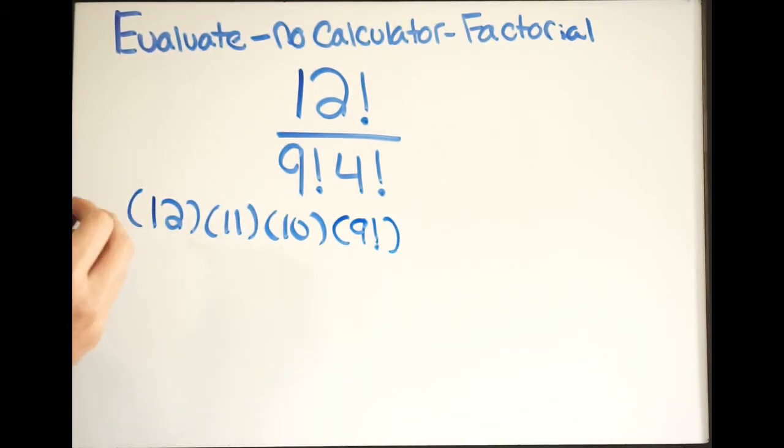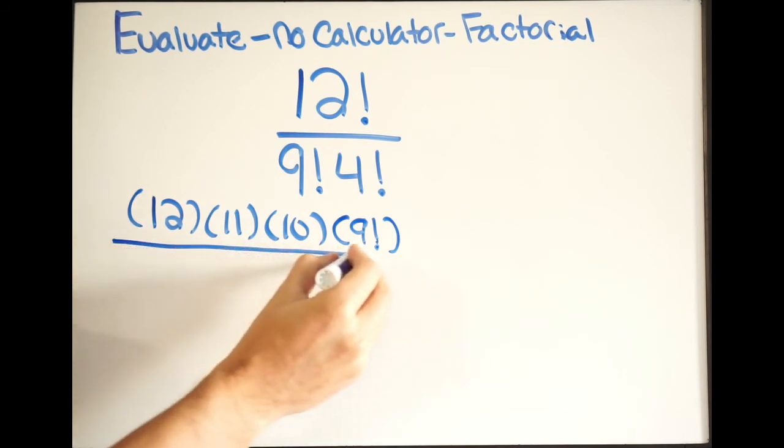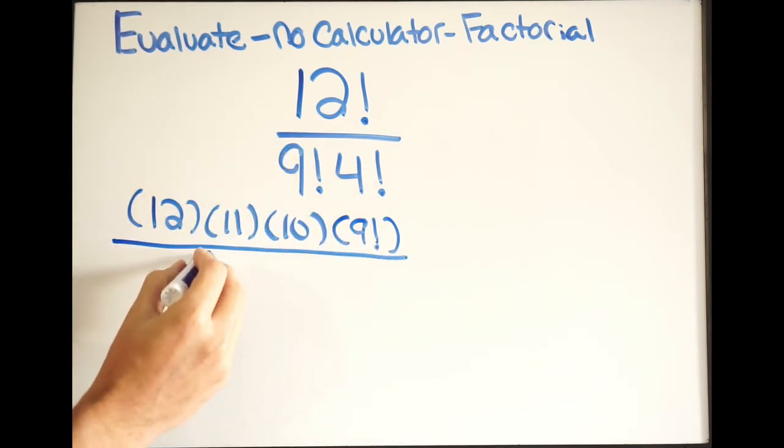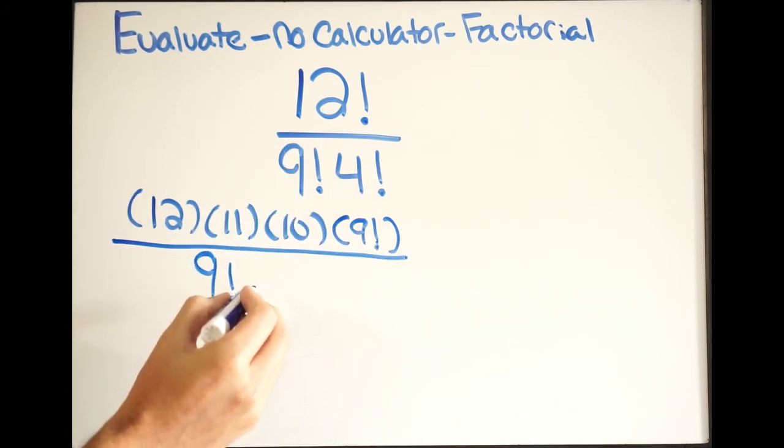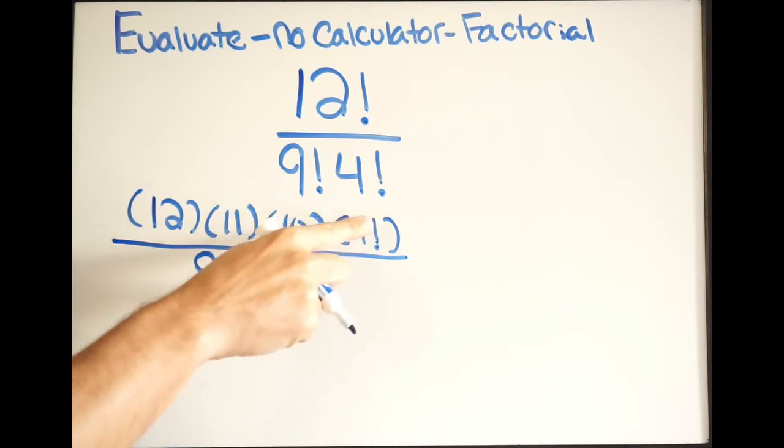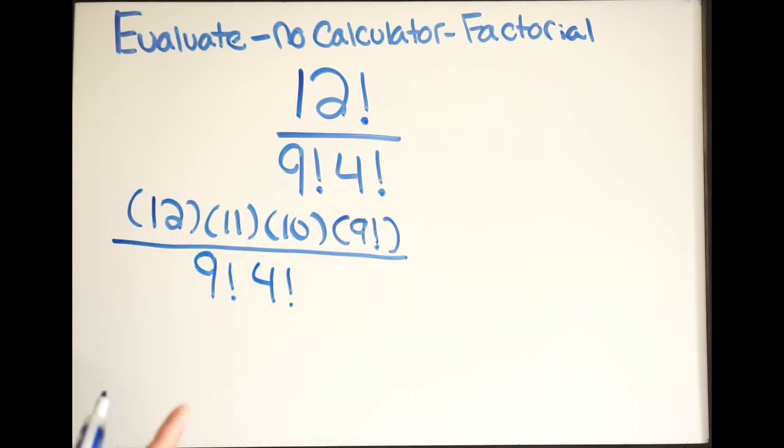And why I did that is because on my denominator, I also have a 9 factorial, and then a 4 factorial. So if you see here, on my numerator and denominator, I have a 9 factorial. That's going to cancel out. So now the numbers are getting a little more manageable to work with.